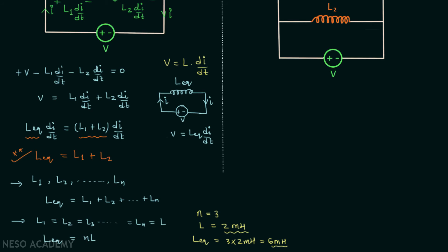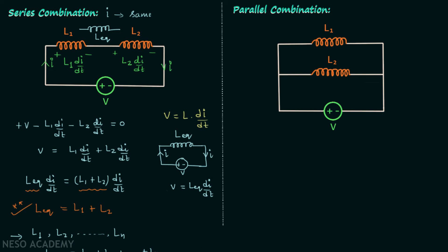Now we will discuss the parallel combination of inductors. In this network, two inductors are connected such that they have the same potential difference V across them. If I is the current leaving the positive terminal of the source, it will get divided at the node — I1 is the current through the first inductor and I2 is the current through the second inductor. Applying KCL: I equals I1 plus I2.